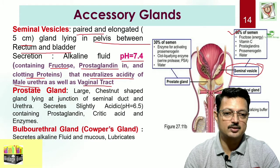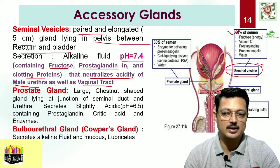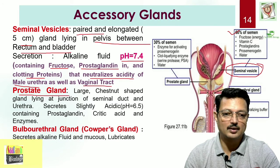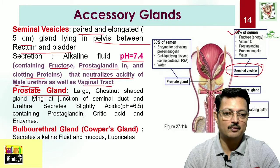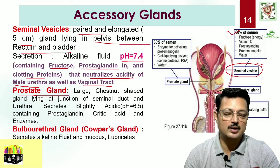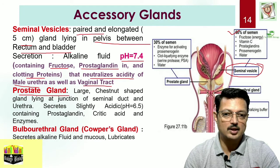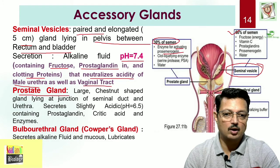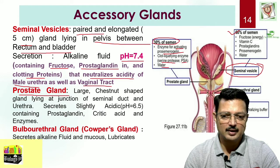The other gland is the largest gland — the chestnut-shaped prostate gland. The union of the urethra with the vas deferens takes place at the level of the prostate gland to form the ejaculatory duct. The prostate contributes around 30 percent of the semen. It contains enzymes for activating proseminogelin and clot-liquefying enzymes like serine proteases, PSA, water, and citric acid. The pH of prostatic fluid is slightly acidic at 6.5.